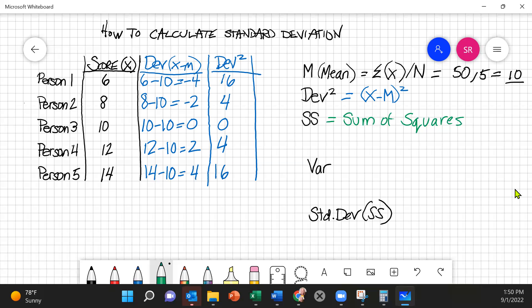And so we're going to be using these numbers, the 16 plus the 4, which is 20, plus the 0, still 20, plus the 4, 24, plus the 16 to get a total of 40. And so the sum of squares equals the sum of all the deviations squared, which equals 40.